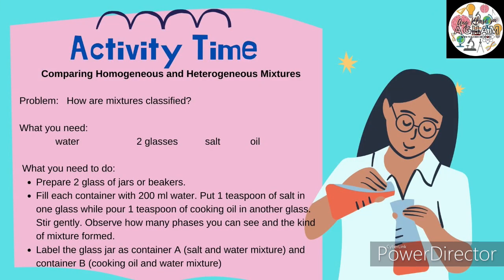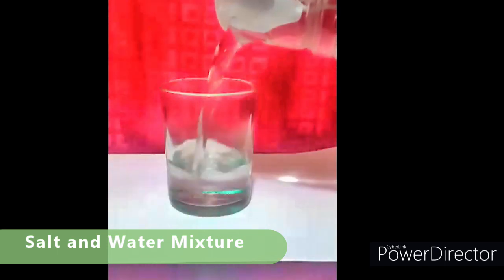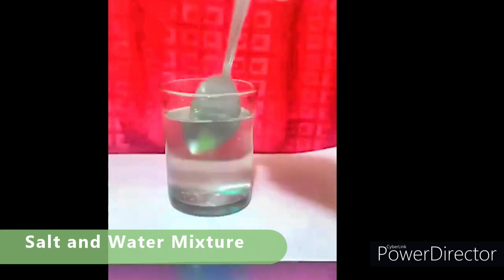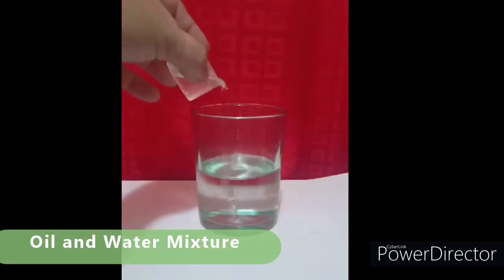Let's do activity time: Comparing homogeneous and heterogeneous mixture. Our problem: how are mixtures classified? What you need is water, 2 glasses, salt, and oil. Prepare 2 glasses or beakers, fill each container with 2 ml of water, and put 1 teaspoon of salt in 1 glass while pouring 1 teaspoon of cooking oil in another glass. Stir gently. Observe how many phases you can see and what kind of mixture forms. Label container A as the salt and water mixture, and container B as the cooking oil and water mixture.